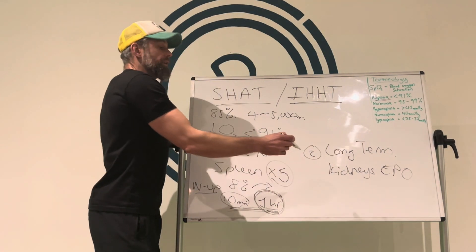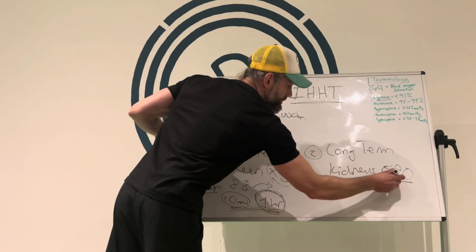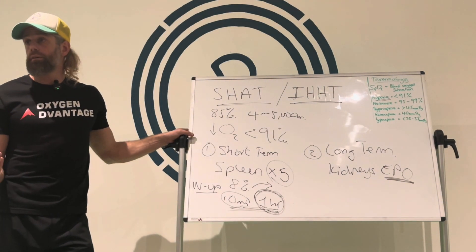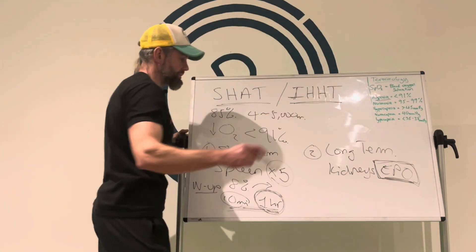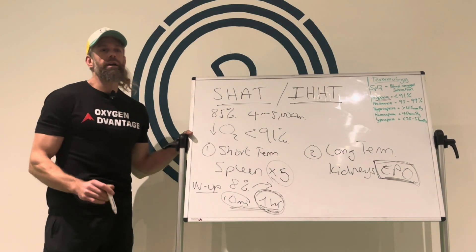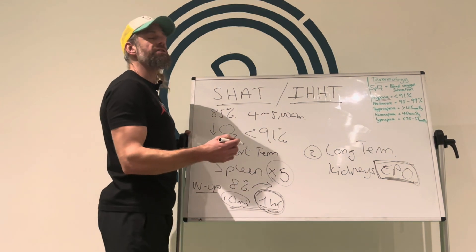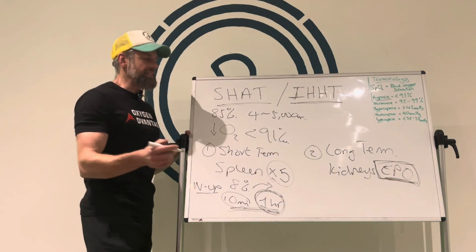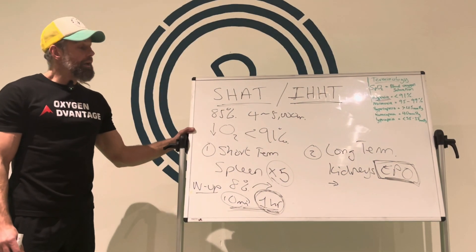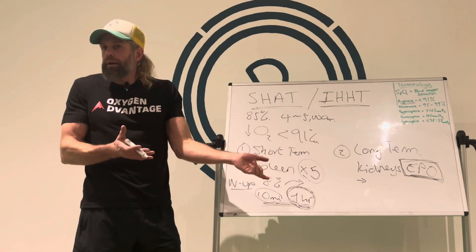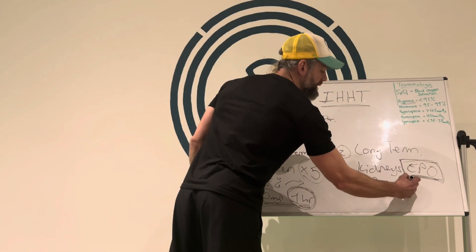Long term, there is a spike in EPO. The kidneys make this natural hormone — naughty people in sports take it externally in small amounts. Like anything people take, the body makes it naturally. EPO stimulates your bone marrow to mature red blood cells. It's a process that's happening all the time — red blood cells are dying and new ones are being made, roughly on a seven-week cycle.